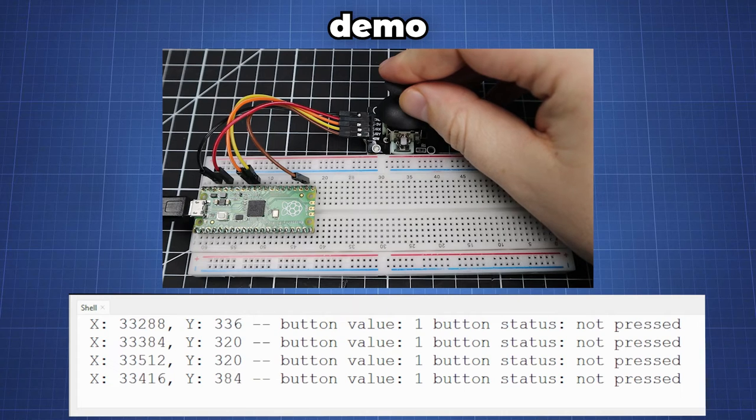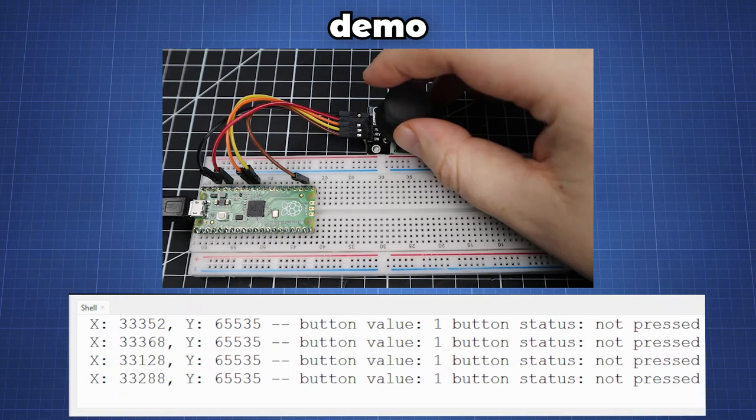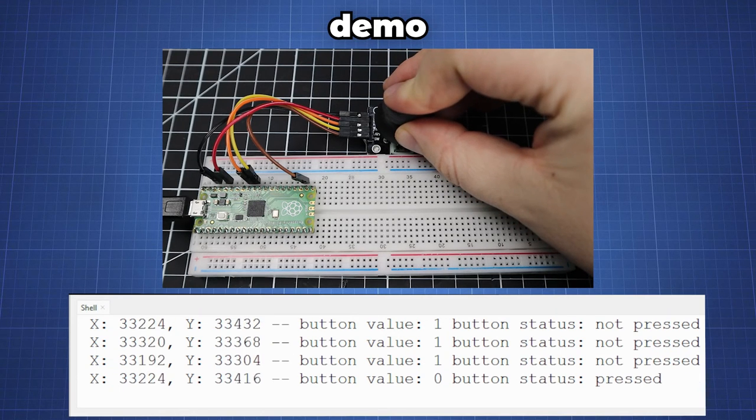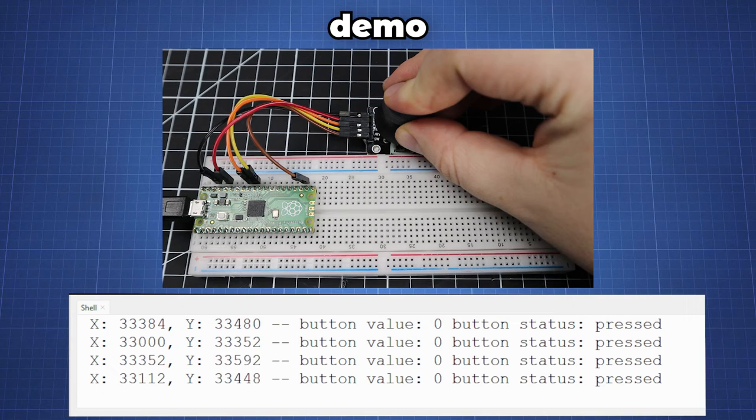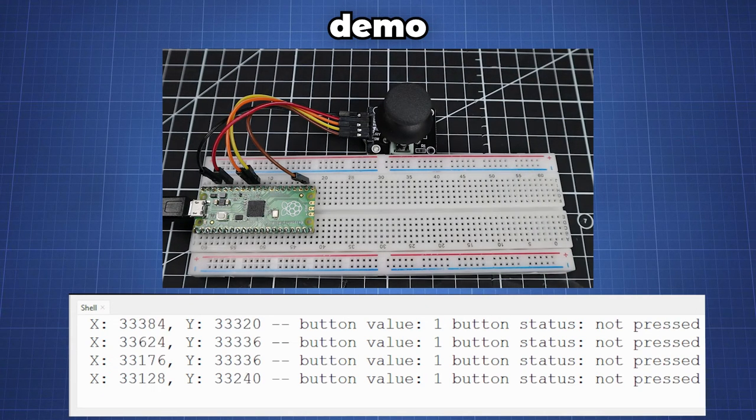Pushing the joystick up gives us a range of 300 to 500 and pushing it down will give us values around 65,000. When we press the button down and hold it down the value will be 0. Using this information we can use an if statement to know our joystick status and button status.